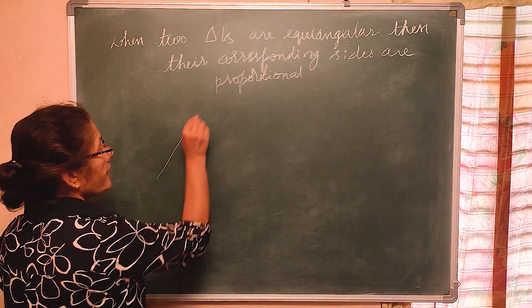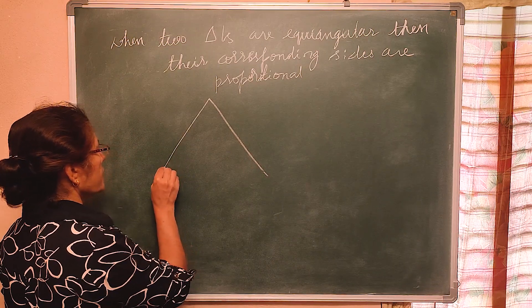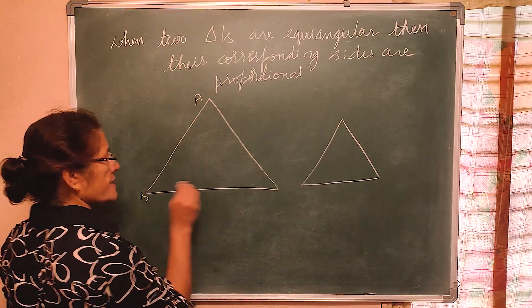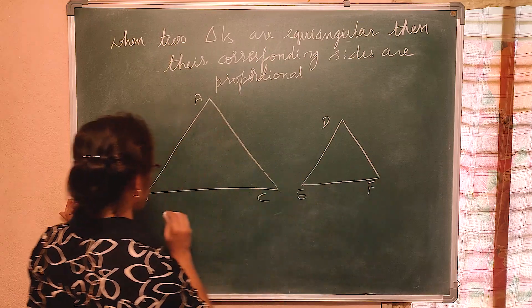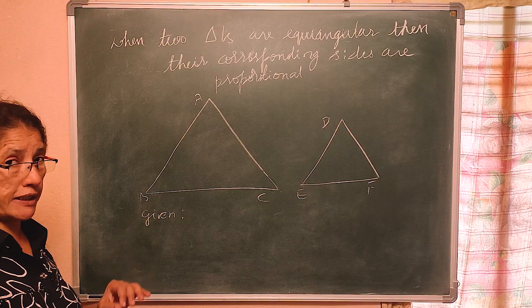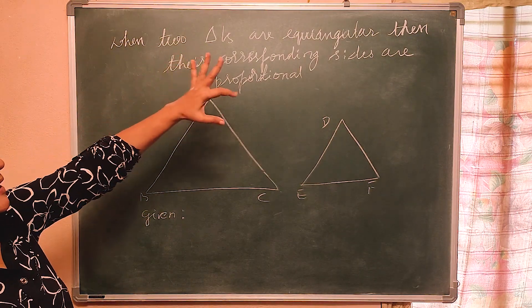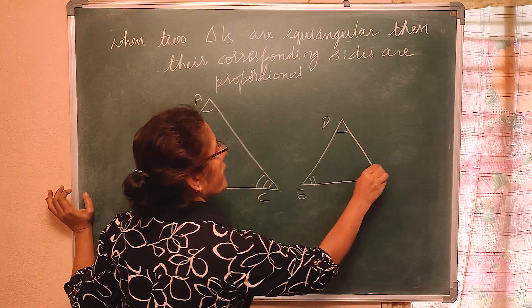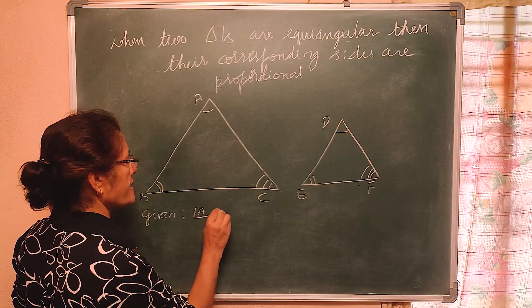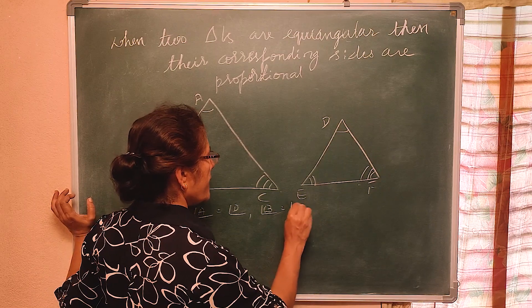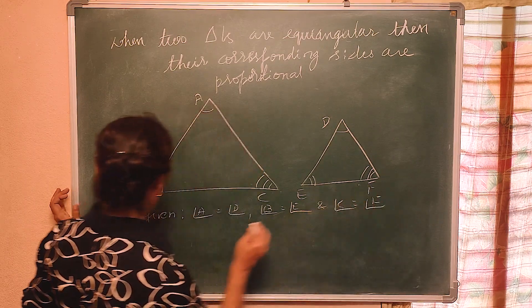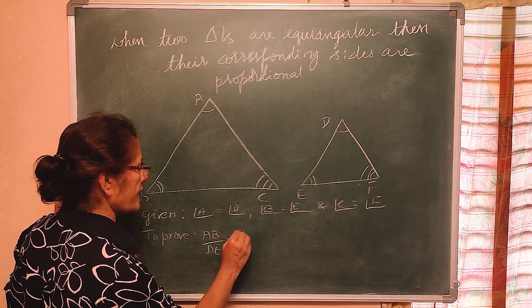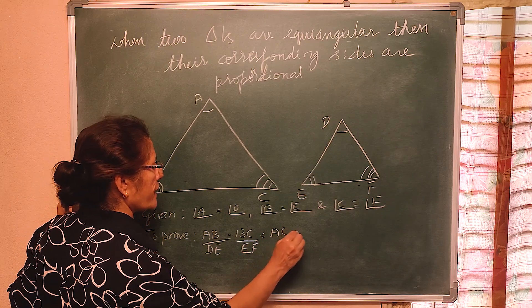When two triangles are equiangular, their corresponding sides are proportional. Let me draw one big triangle ABC and one smaller triangle DEF. Given: angle A = angle D, angle B = angle E, and angle C = angle F. To prove: AB/DE = BC/EF = AC/DF.